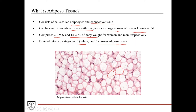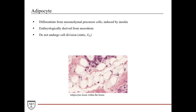Adipocytes differentiate from mesenchymal precursor cells induced by insulin. They're embryologically derived from the mesoderm layer. They do not undergo cell division, so they're considered a static cell population and are in the G0 phase of the cell cycle.